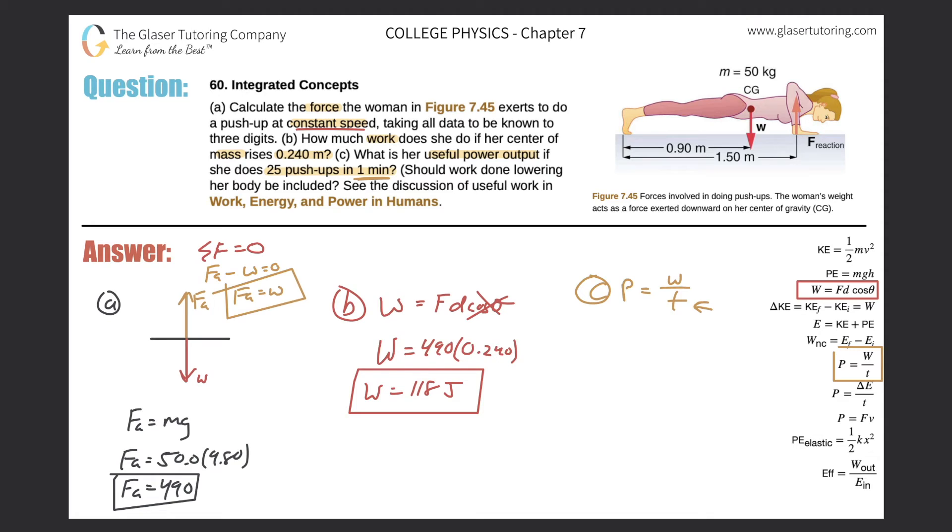Now what's the work done? Well, every time she goes—she's doing 25 push-ups. Now remember though, 25 push-ups involve down and up. So every 25 push-ups, there's really 50 parts that she's doing work in, both the descent and then the ascent.